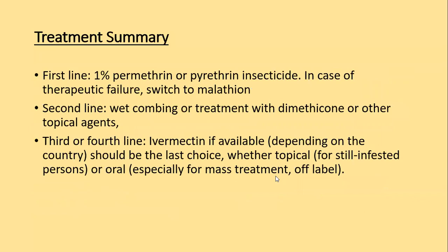Treatment summary: first line is 1% permethrin or pyrethrin insecticide. In case of therapeutic failure, switch to malathion as second line. Wet combing or treatment with dimethicone and other topical agents is also second line. Third and fourth line is ivermectin if available — topical for still-infested persons and oral especially for mass treatment, which is an off-label indication.